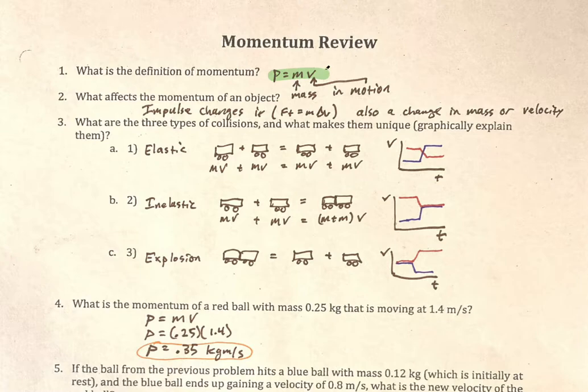If we look at the formula, P equals mv — or really rho equals mv — we've got mass and we've got velocity, which represents our motion. So: mass in motion.